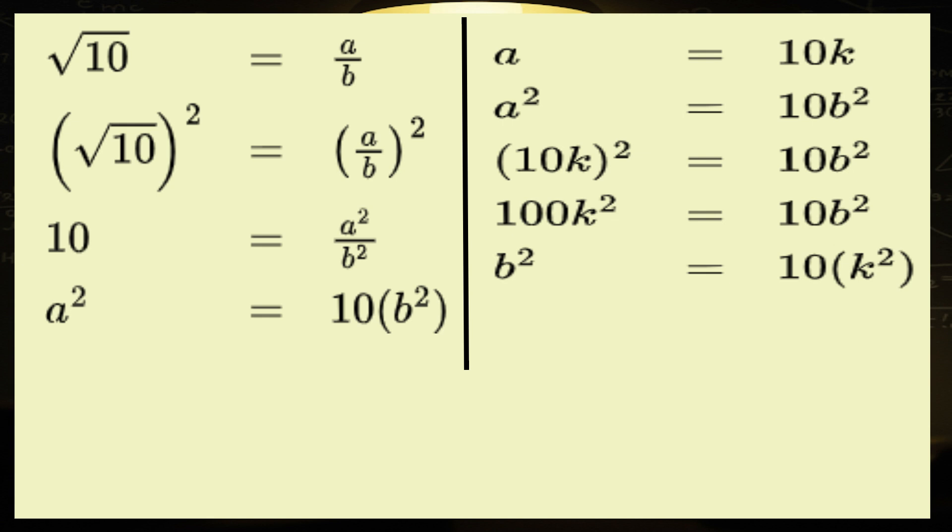And now folks, we can clearly see that b squared is also divisible by 10. Some serious alarm bells. Because, by the same rule we used earlier, we can now say that b must also be divisible by 10. That is, there exists z such that b equals 10z. And here's where things go absolutely bananas.